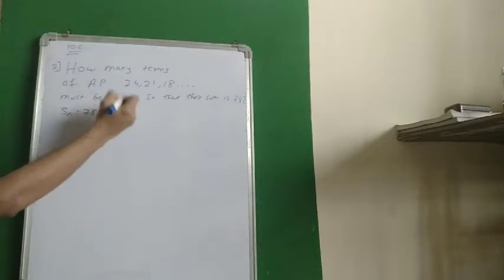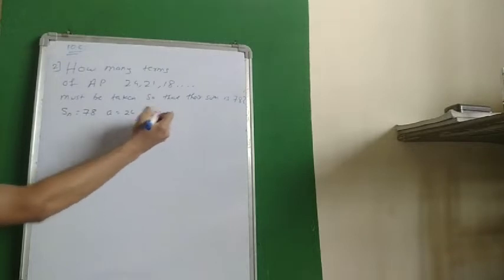We have A, A is equal to 24, and we also have D. That is T2 minus T1, 21 minus 24.